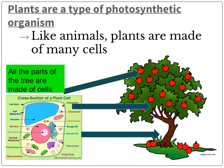Plants are a type of photosynthetic organism — we'll describe what that means in just a second — but something to consider is that plants, like animals, are made of many cells. This is a general concept of what a plant cell looks like; it has a cell wall and all that, we'll talk more about that later. But no matter if you're talking about the apple, the leaves, or the bark, plants are made of many cells.